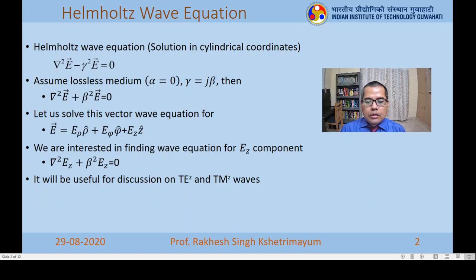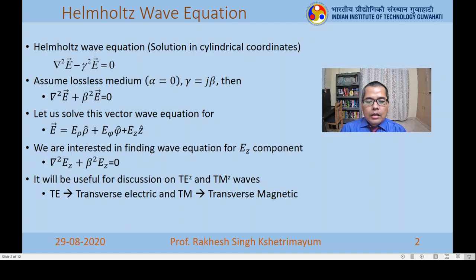For TE-z waves, the electric field is perpendicular to the direction of propagation (z-axis) — transverse electric means the electric field has no z-component. For TM-z waves, transverse magnetic means the magnetic field is perpendicular to z, so the magnetic field has no z-component. In other words, for TE-z waves E-z is zero, and for TM-z waves H-z is zero.